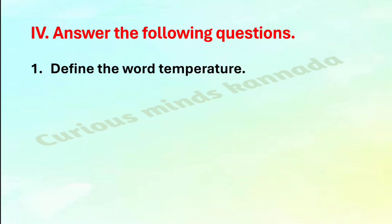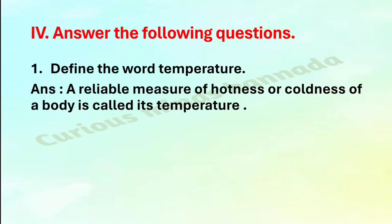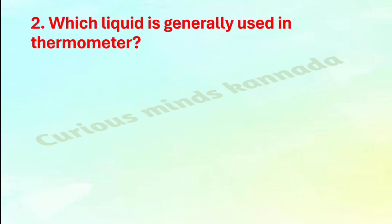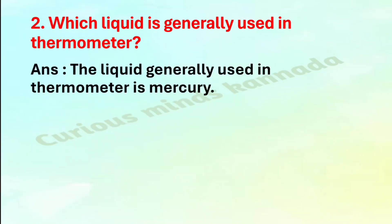Extra answer questions: First, define the word temperature — answer: The reliable measure of hotness or coldness of a body is called its temperature. Second, which liquid is generally used in a thermometer? Answer: The liquid generally used in thermometers is mercury.